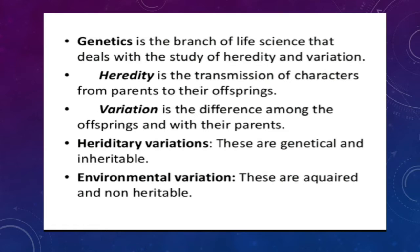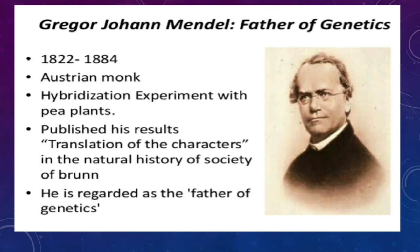There are two types of variations: hereditary variations and environmental variations. Hereditary variations arise from recombination, meiosis, and fusion of gametes — they are genetically produced and are inheritable, passed on to the next generation. Environmental variations, on the other hand, are acquired during the lifetime and are non-inheritable.